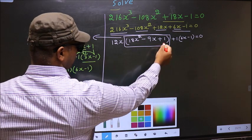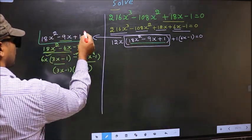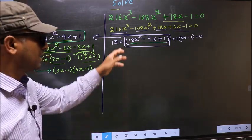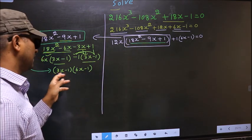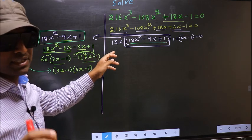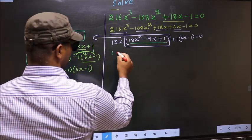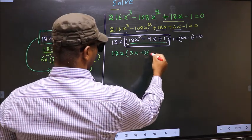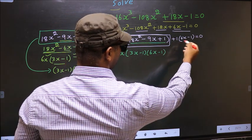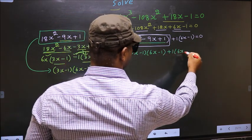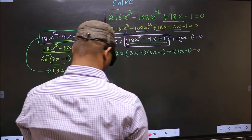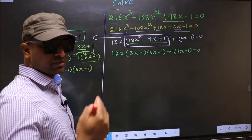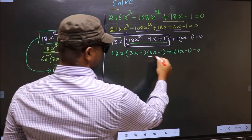Now in place of this quadratic we write the factored form. So the equation changes to 12x times (3x minus 1) times (6x minus 1), plus 1 times (6x minus 1), equal to 0. From the entire equation, what can be taken out common is (6x minus 1).